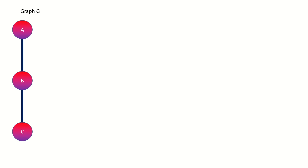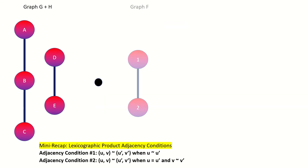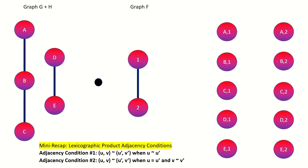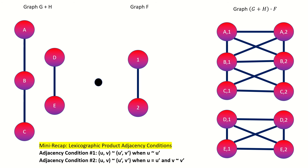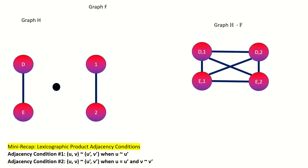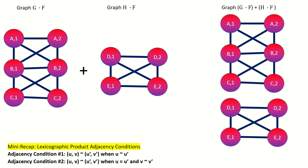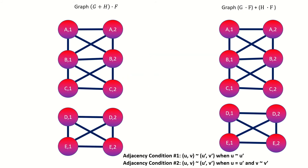Let me show you an example. Let's take the disjoint union of graph G with graph H, and then take the lexicographic product of that graph with graph F. Feel free to pause and do this yourself. I've left a recap in the bottom left-hand corner of the adjacency conditions for a lexicographic product. Remember that the vertex set of the lexicographic product is the Cartesian product of the vertex sets of the factor graphs. Here's our final result. Now if we take the lexicographic product of G with F, and the lexicographic product of H with F, and then take the disjoint union of those two graphs, what we get is the same graph as the lexicographic product of G plus H with F. They are indeed equivalent.